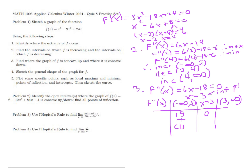If we try a value greater than three, like 3.5, we get 21 minus 18, which is a positive value. So after the inflection point the function is concave up. To summarize: the graph is concave down before x = 3 and concave up after x = 3.